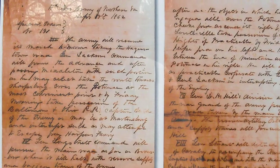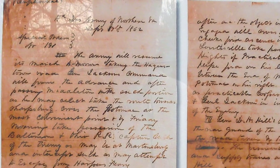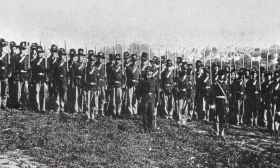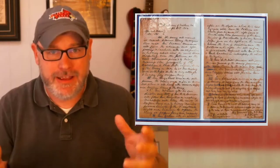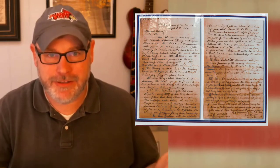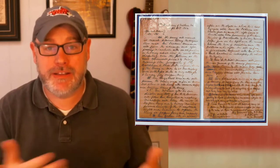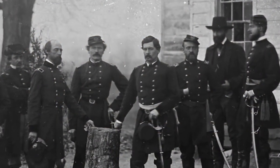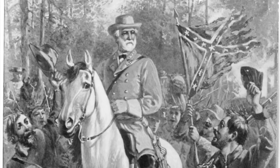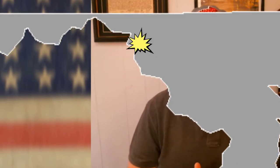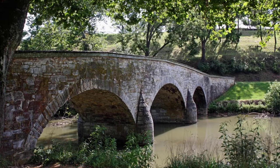Lee's battle plans ended up getting discovered by a Union soldier, who found three cigars wrapped in a piece of paper and realized it contained Robert E. Lee's plans. McClellan received these plans, but he waited a full 18 hours before issuing any orders in response. This gave Lee time to reorganize his army and prepare for an attack near the small town of Sharpsburg, Maryland, along Antietam Creek.